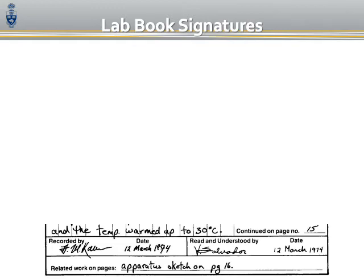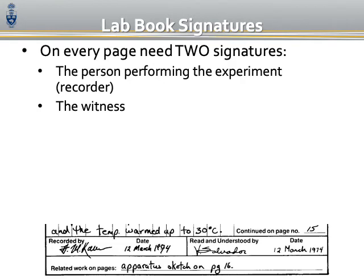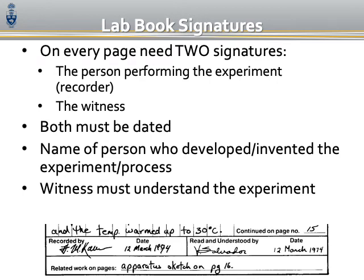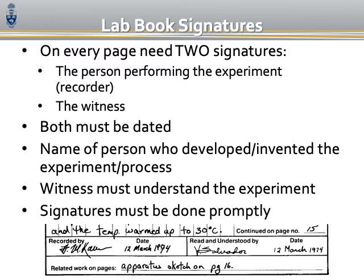Regarding signatures in your lab book: on every page there must be two signatures — the person who performed the experiment and the witness. Both must be dated. One signature is from the person who developed or invented the experiment or process, the other is the witness, who must attest that they understand the experiment. These signatures must be done properly. Typically we're not very strict about this, but it's good practice because when you start working on something crucial that may lead to patents or disputes, this becomes very important.